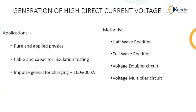High DC voltage generation methods are classified into four different categories: the first is half wave rectifier, full wave rectifier, voltage doubler circuit, and voltage multiplier circuit. Let us start with the first method, called the half wave rectifier, which is the simplest method used for high direct current voltage generation.